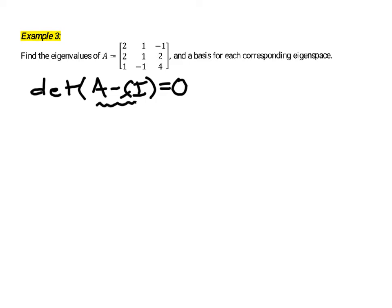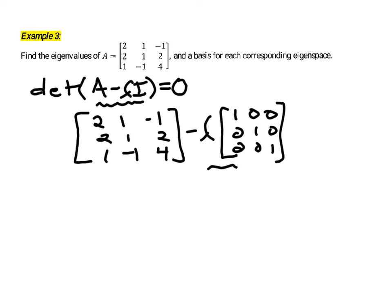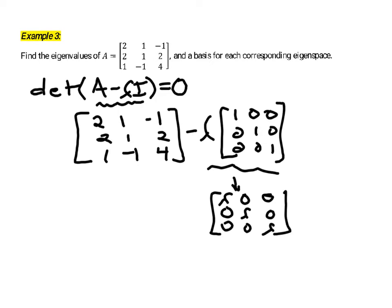Our first order of business is to set up the A minus lambda I matrix, which is this given matrix minus lambda times the identity matrix of the same size. This is going to be a 3 by 3 identity matrix. Multiplying lambda times that 3 by 3 identity matrix gives you a matrix with lambdas down the main diagonal and zeros in every other entry. So when we take matrix A and subtract lambda I, we're just subtracting lambda from the diagonal components.